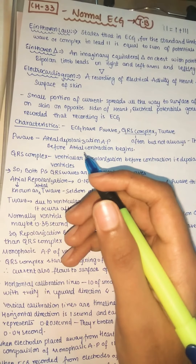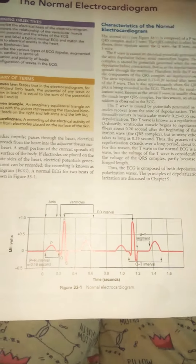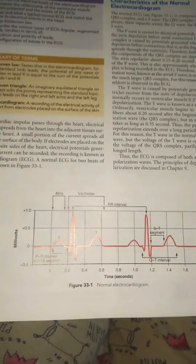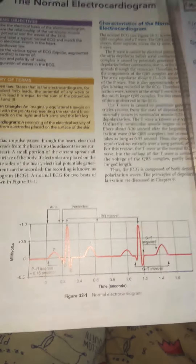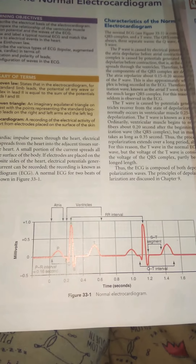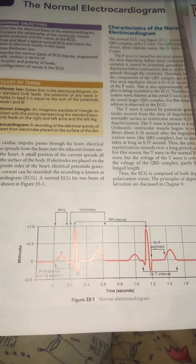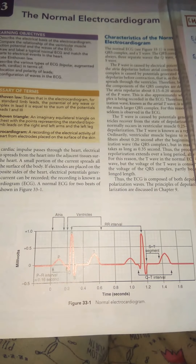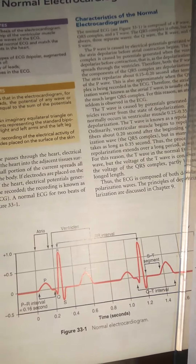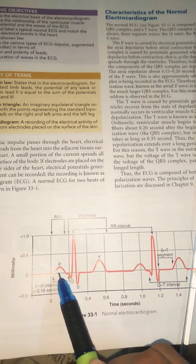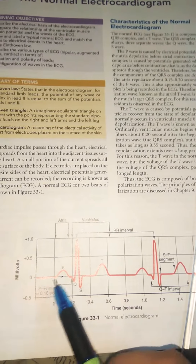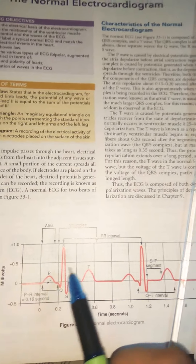The P wave is due to atrial depolarization. You can see in a normal ECG diagram: the P wave, then the QRS complex, then the T wave. The P wave is mainly due to atrial depolarization — it is the action potential formed before atrial contraction begins. In the heart, first we have atrial depolarization, next ventricular depolarization, followed by atrial repolarization and then ventricular repolarization.